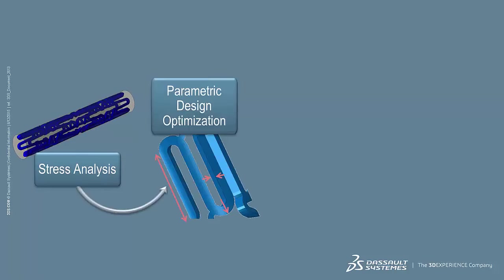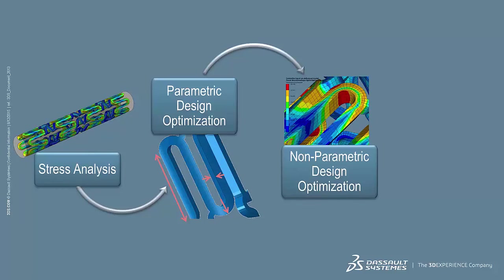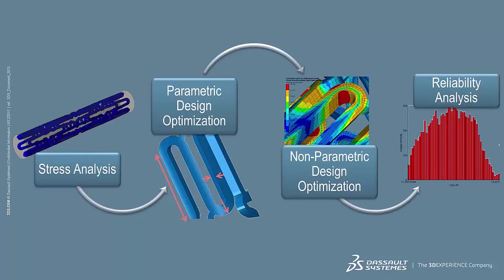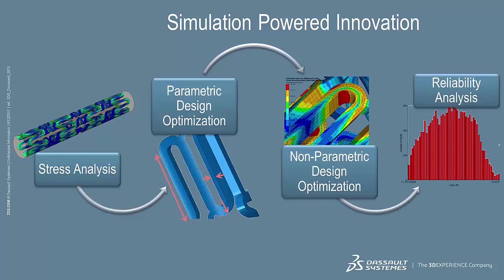We start with methods on how to create a stent model and perform a stress analysis. Then we perform a parametric design optimization in which we can change the geometric properties of the stent such as length of the strut, the width, and the radius of the strut geometry. Then we perform non-parametric design optimization, showing how the shape of the stent strut itself can be changed. Finally, we talk about reliability analysis, showing how effective the stent is when deployed across a range of population where the size of the coronary artery may vary from person to person.